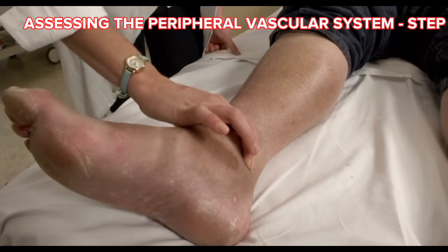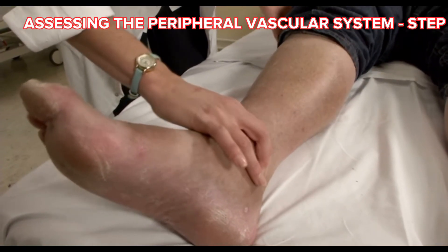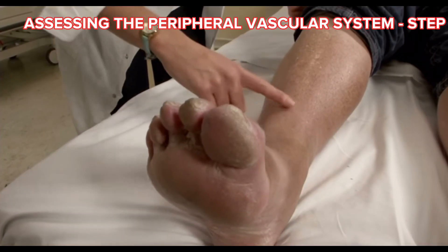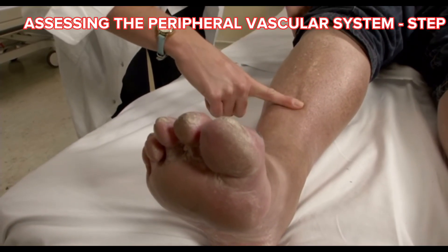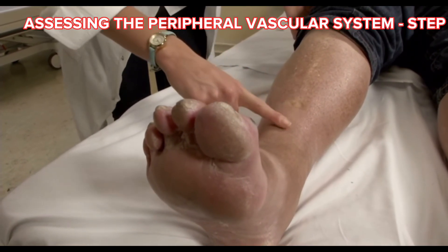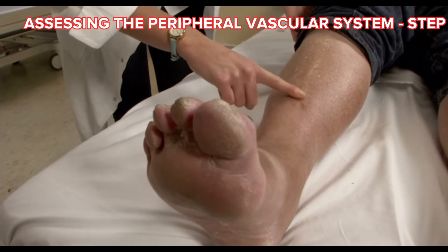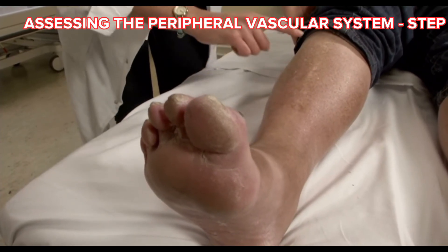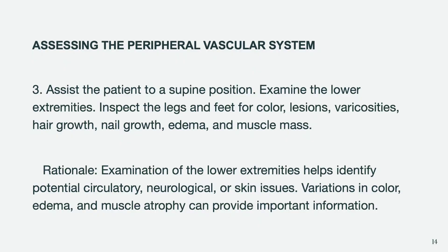Assist the patient to a supine position. Examine the lower extremities. Inspect the legs and feet for color, lesions, varicosities, hair growth, nail growth, edema, and muscle mass. Rationale: Examination of the lower extremities helps identify potential circulatory, neurological, or skin issues. Variations in color, edema, and muscle atrophy can provide important information.